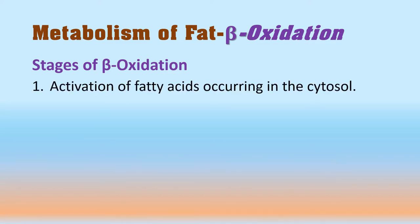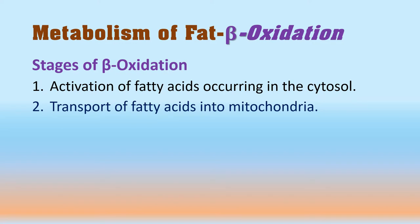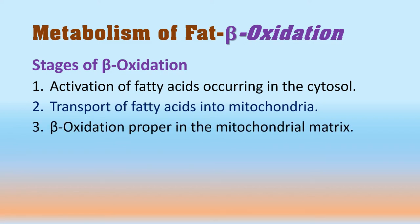There are three stages of beta oxidation. In the first stage there is activation of the fatty acid, occurring in the cytosol. In the second step there is transport of the fatty acid into the mitochondria. In the third step there is the actual beta oxidation occurring within the mitochondria.